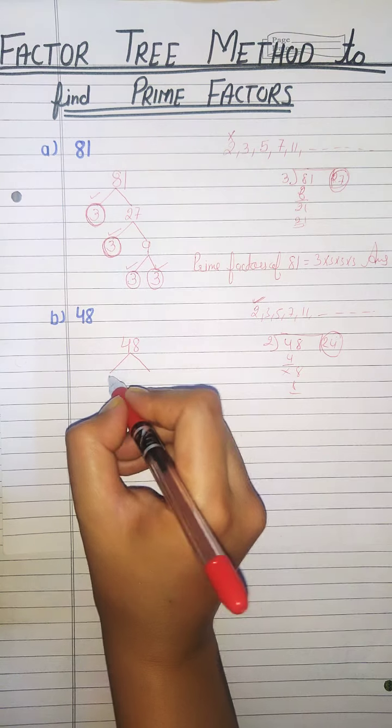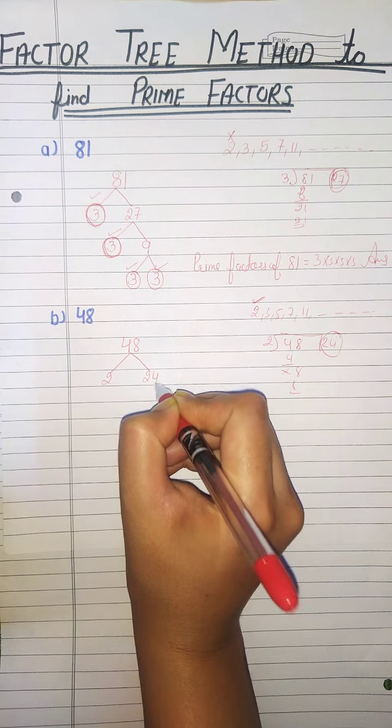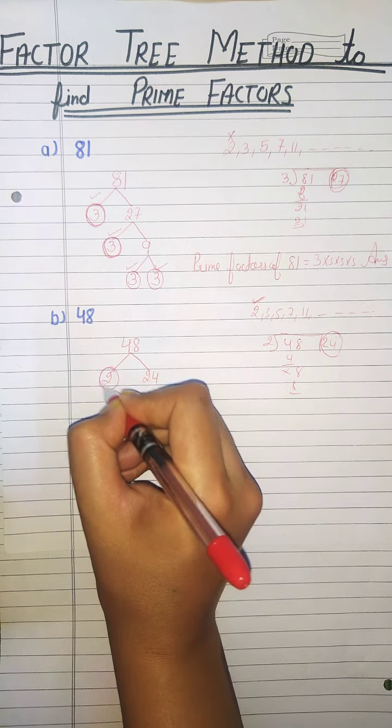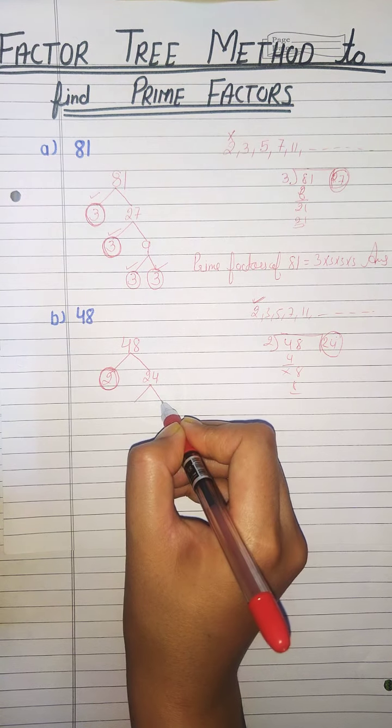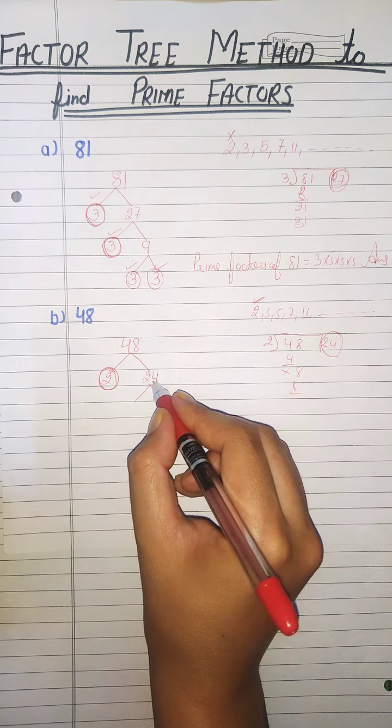So quotient is 24. 2 times 24 is 48. 2 is a prime number. Split 24.